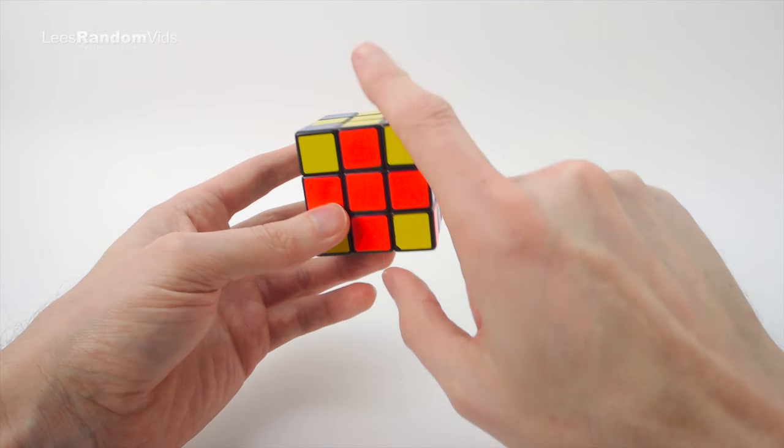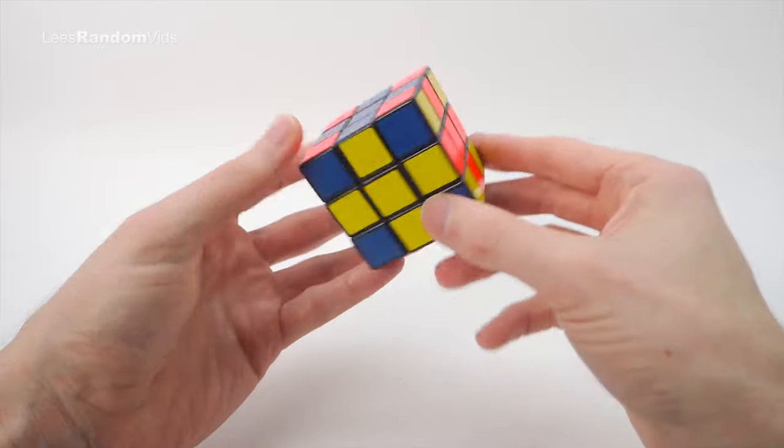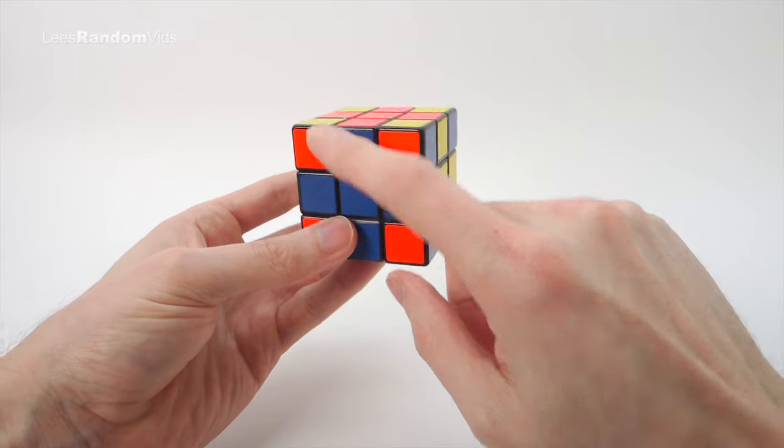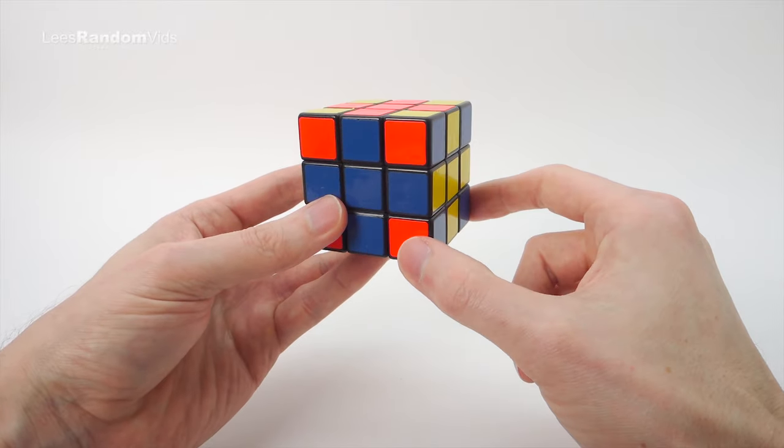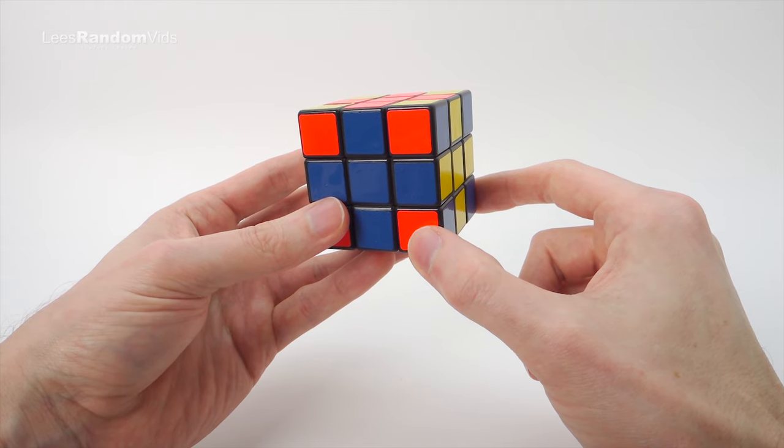So this is our front face, or that's our front face, or that's our front face. So we're mixing these three colors up and we just do the same algorithm two more times.